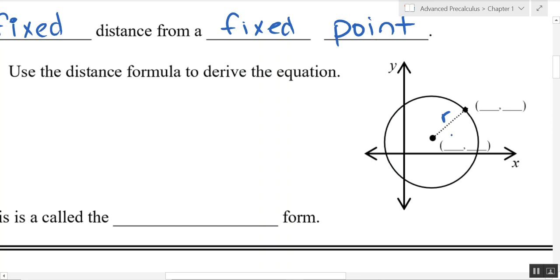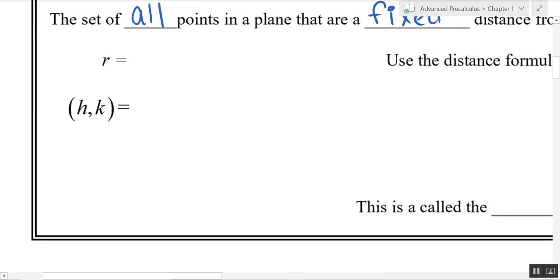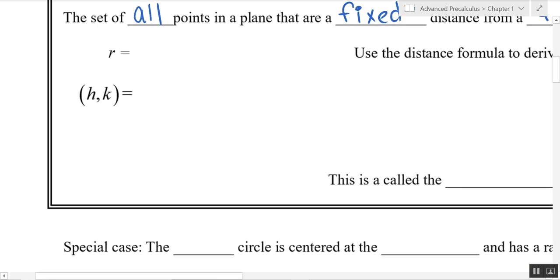We'll call the center the point H,K and a point on the outside is our X,Y coordinate. When we're talking about terms and vocabulary, R is obviously the radius which is a fixed distance, and we said H,K is the fixed point which is the center of the circle.